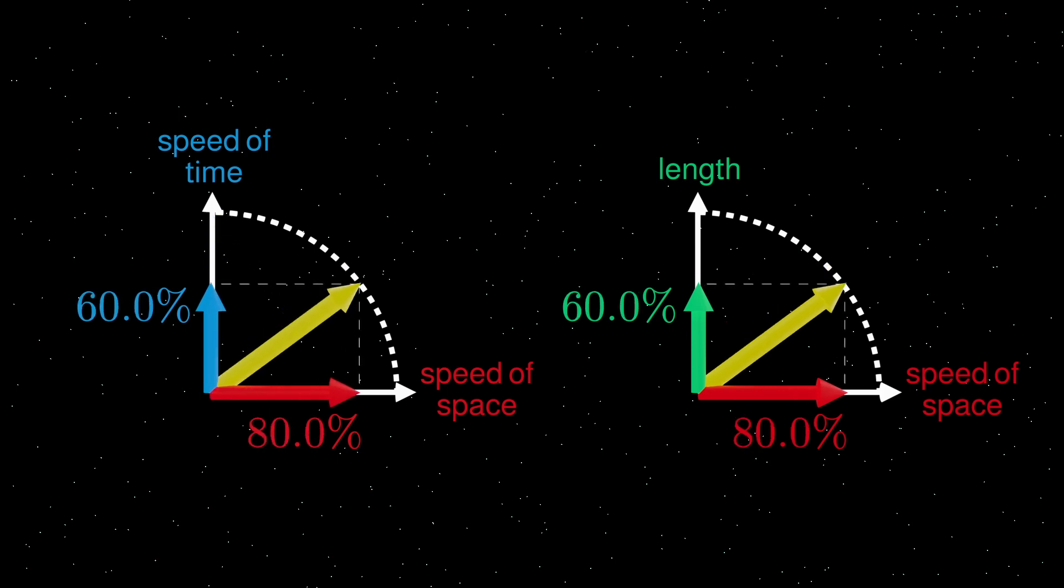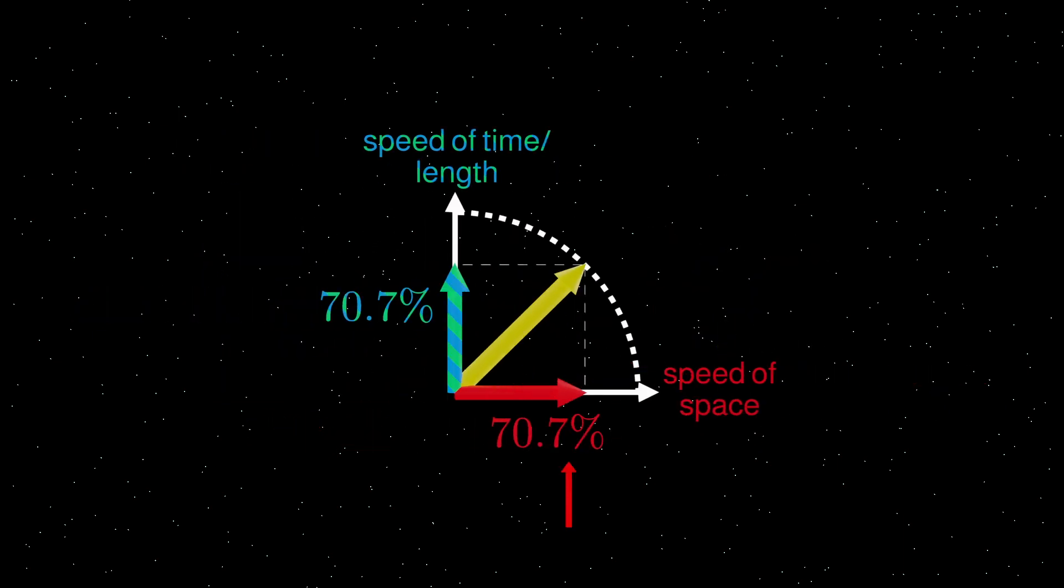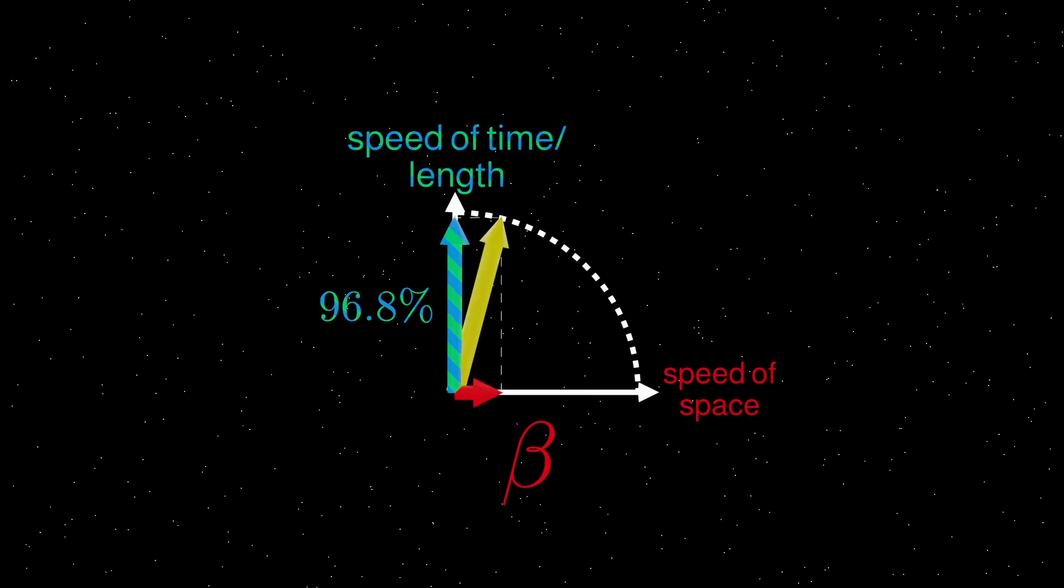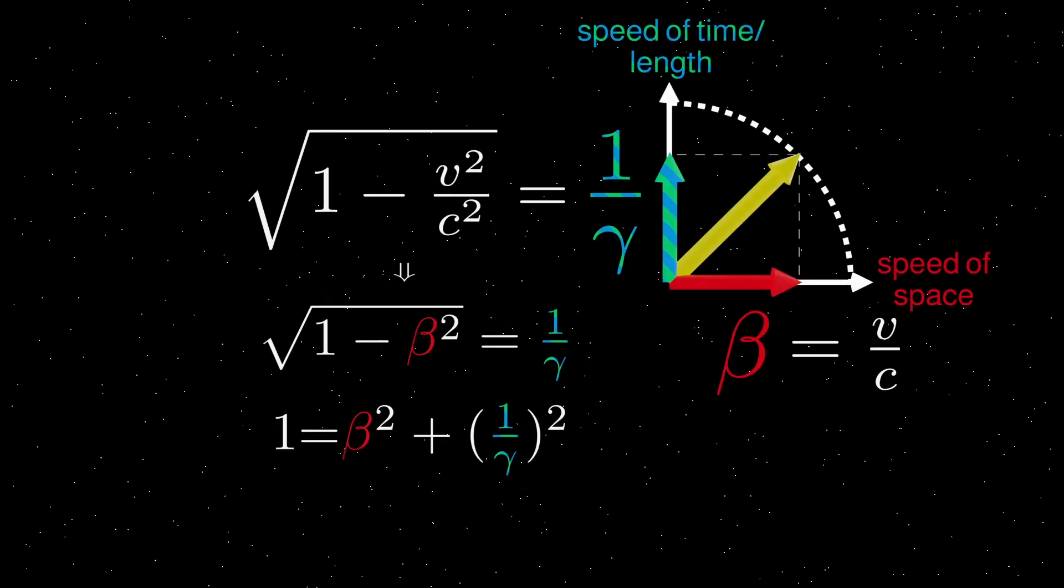Anyways, since these two speedometers give the same vertical value, you can think of it as one unified speedometer, where the horizontal component is speed through space relative to you, and the vertical component is the combined speed of time slash length in the direction of travel. Physicists will usually call this unitless value of speed that goes between 0 and 1 beta, and the other one 1 over gamma, with these formulas. And you can kind of see why this is a circle, because this part is basically the formula for a circle.